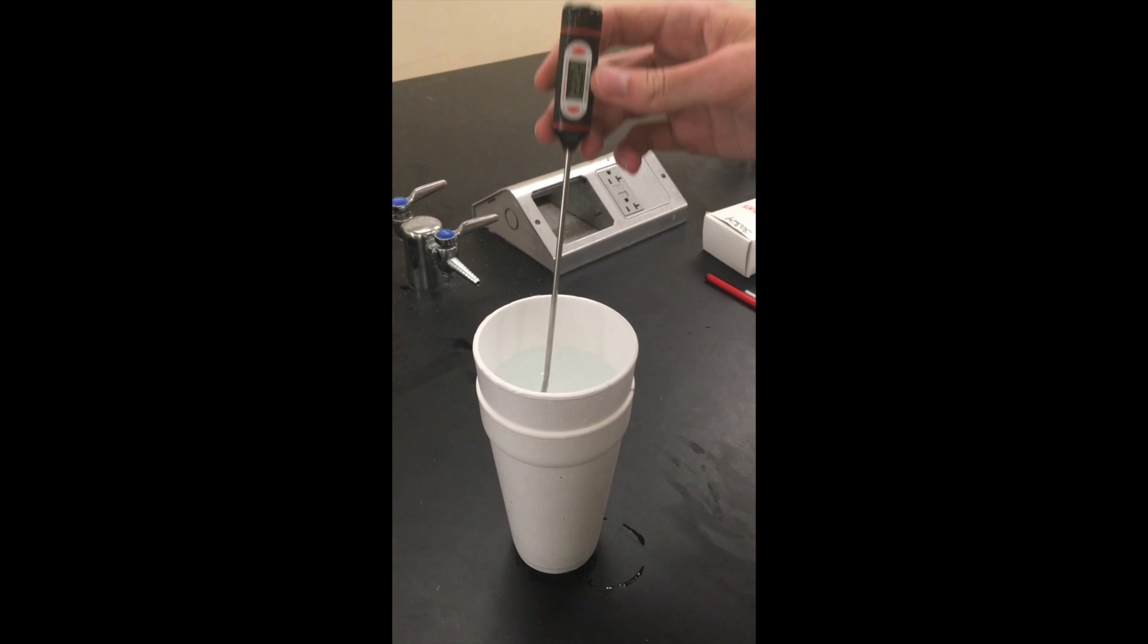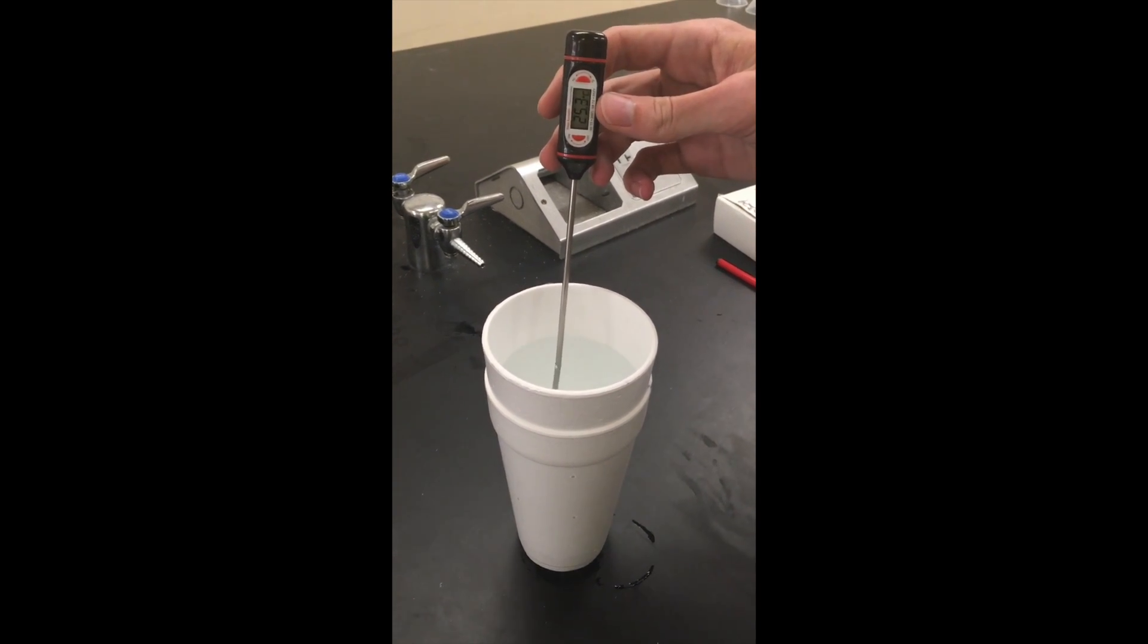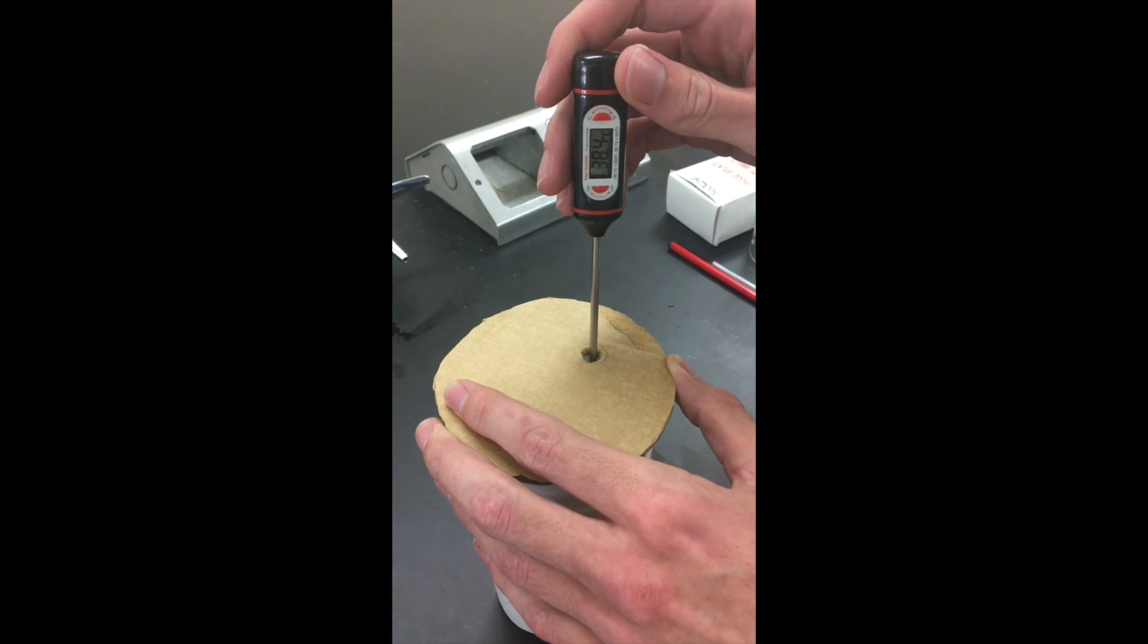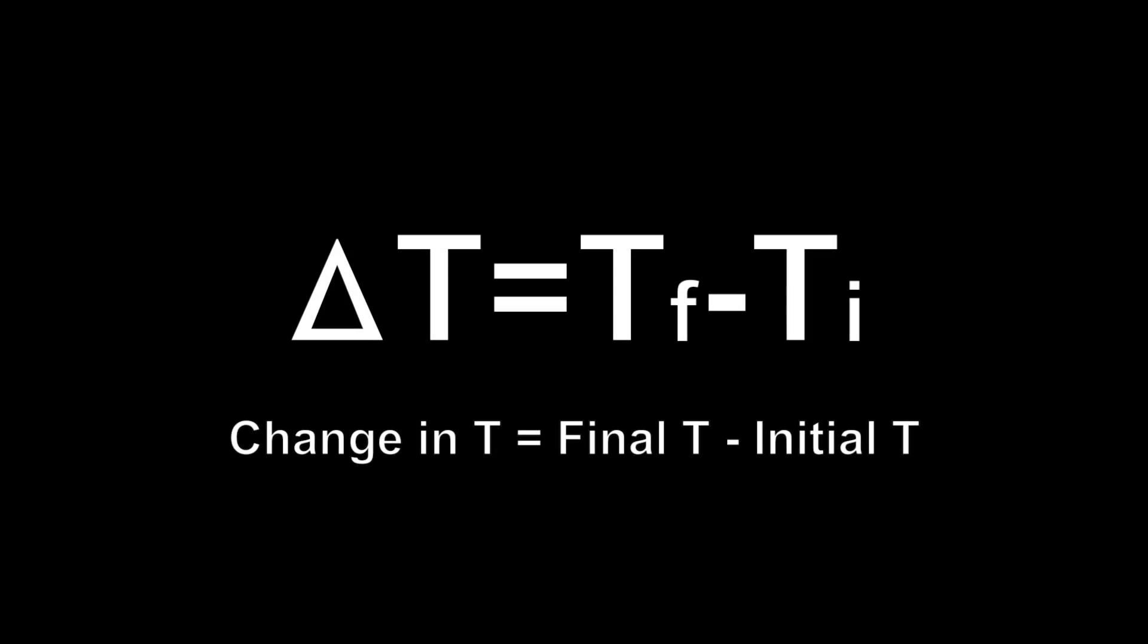To use this type of calorimeter, you take the temperature of the solution before any reaction takes place, and then add all necessary reactants, put the cover on top, and take the temperature once the reaction is finished. To find the change in temperature, you simply subtract the final temperature from the initial temperature.